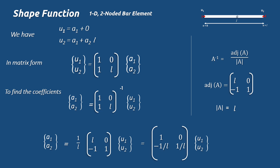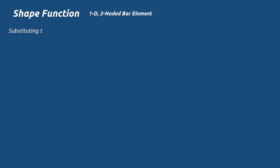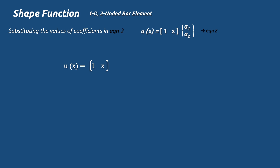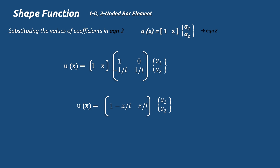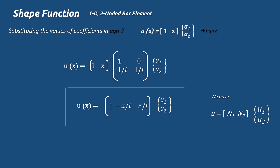Substituting the values of a1 and a2 into equation 2: u(x) = [1  x] · [1 0; −1/L  1/L] · {u1  u2}. Multiplying the terms gives: u(x) = [1 − x/L,  x/L] · {u1  u2}. Comparing with u = N1·u1 + N2·u2, we identify the shape functions: N1 = 1 − x/L and N2 = x/L.